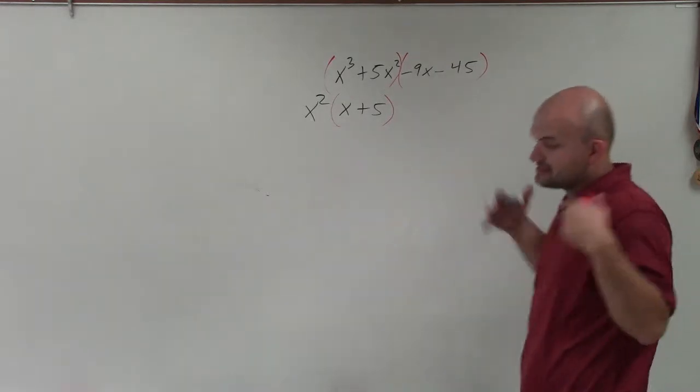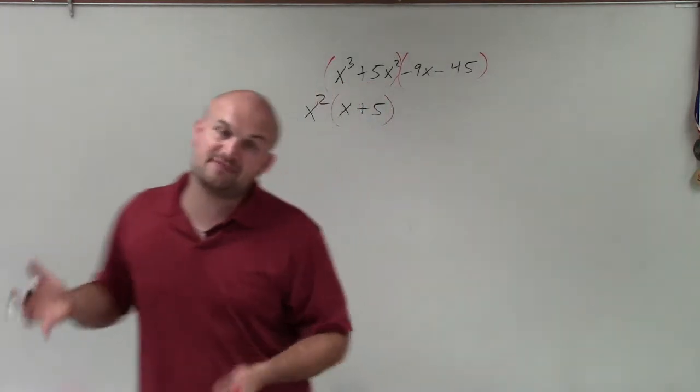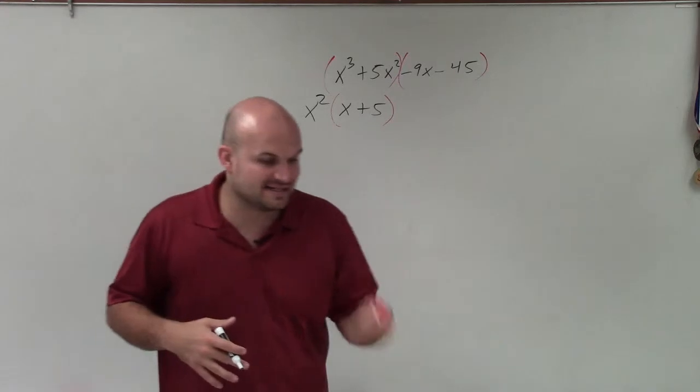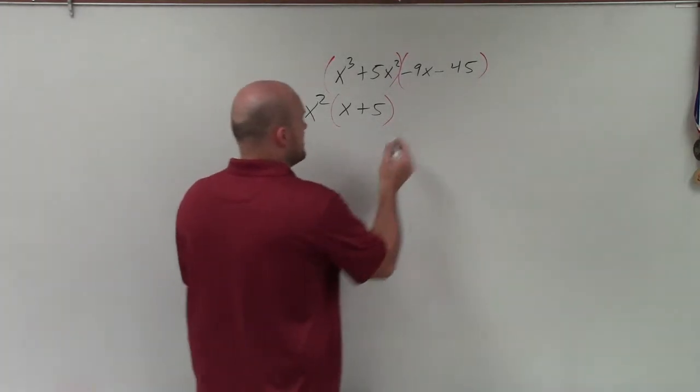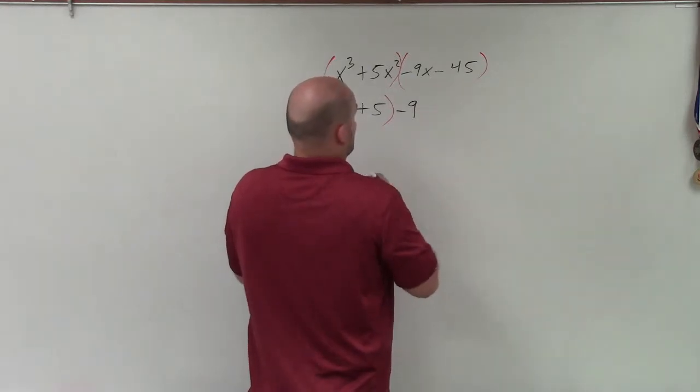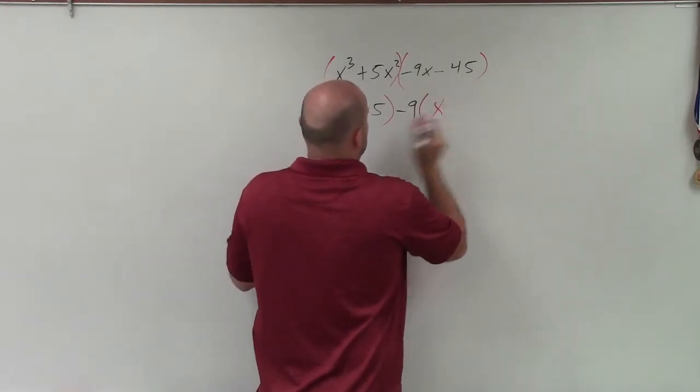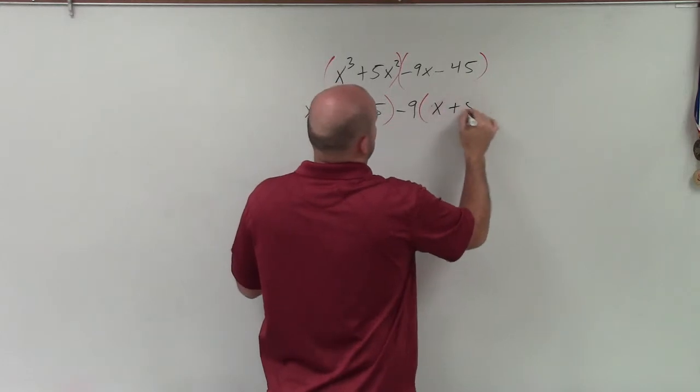Then I look at these two terms and say, all right, what is my common factor of negative 9x and negative 45? Well, negative 9 divides into negative 9x, as well as to negative 45. So that would be my greatest common factor. So therefore, that gives me x plus 5.